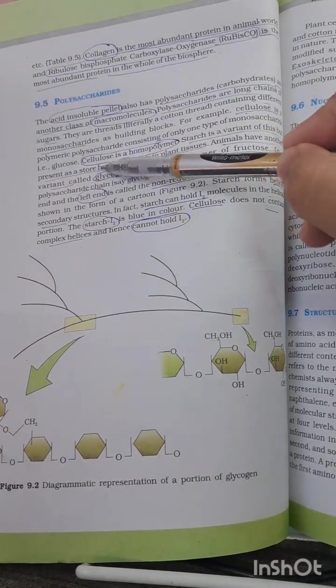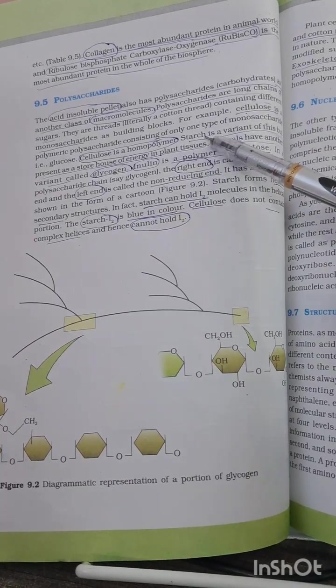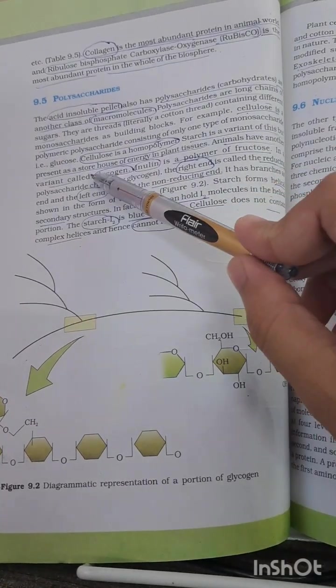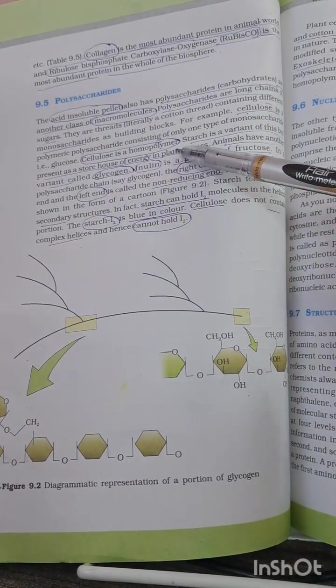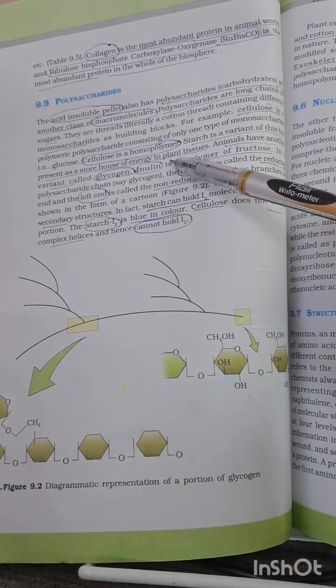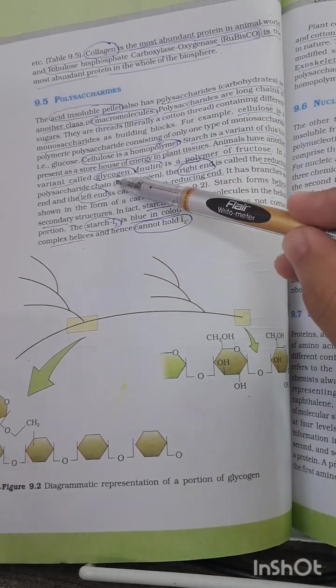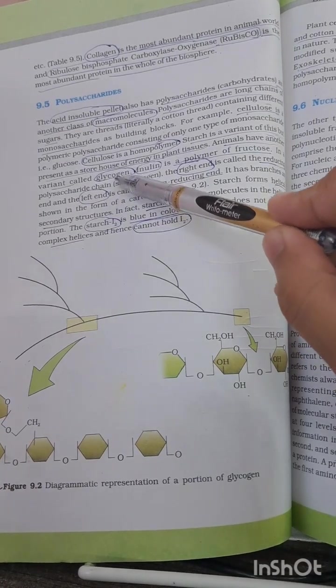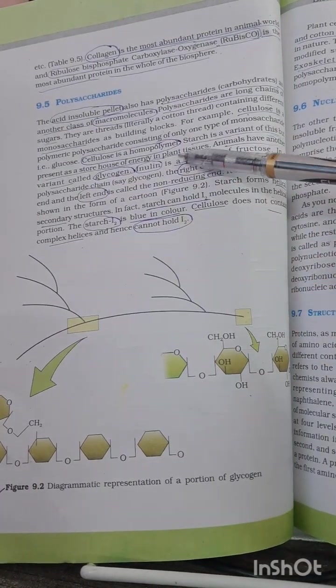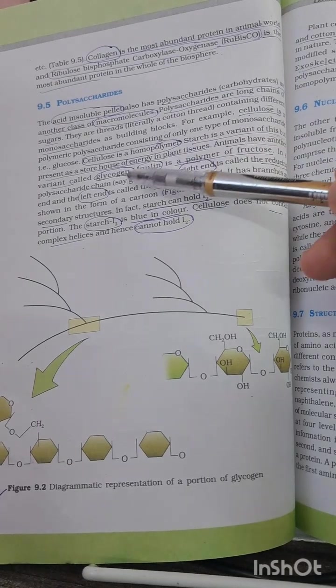Starch is a variant of this but present as energy storehouse in plant tissue. Animals have another variety called glycogen, and glycogen stores energy in animals while in plants it is starch. You have to remember and distinguish between these two.